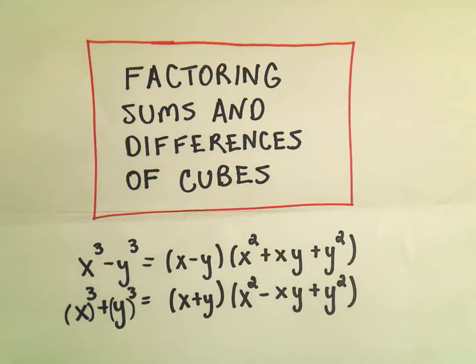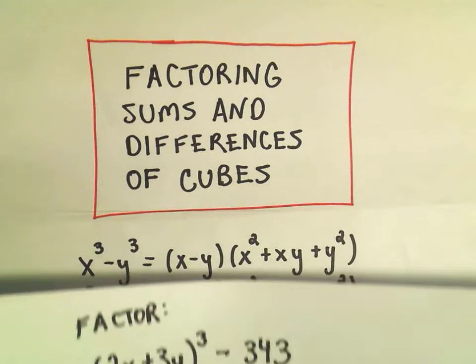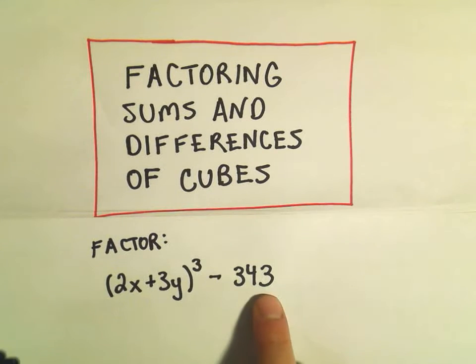In this video I want to do one last example of factoring sums and differences of cubes. We're going to use one of the two formulas as before. In this example we've got the quantity 2x plus 3y cubed minus 343.